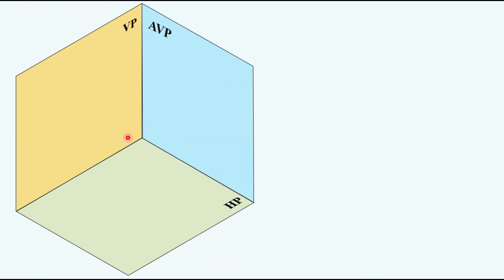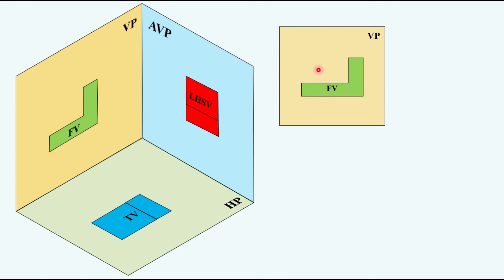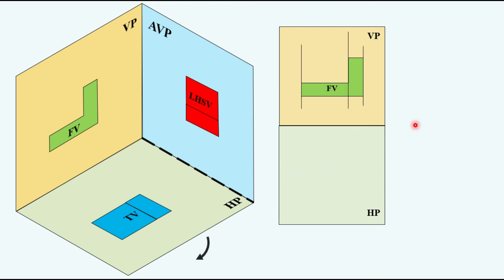Let us understand the object when it is kept in the first quadrant and drawn using the first angle projection method. This is the vertical plane on which we get our front view, and this is our XY line — the intersection or meeting line of the horizontal and vertical plane. This is our vertical plane and we get the front view here. We don't have this plane in 2D so we rotate it downwards, and after rotating it the top view is shifted down, and we obtain the top view using these projections.